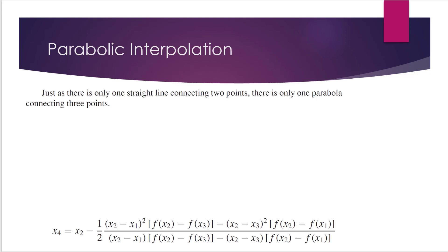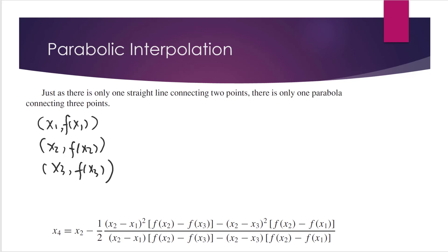First, let's see how to find the second-order polynomial connecting these three points. Just as there is one and only one straight line connecting any two points, there is one and only one parabola connecting any three points. Assume that we have three points on the true curve: the first point (x1, f(x1)), the second point (x2, f(x2)), and the third point (x3, f(x3)).